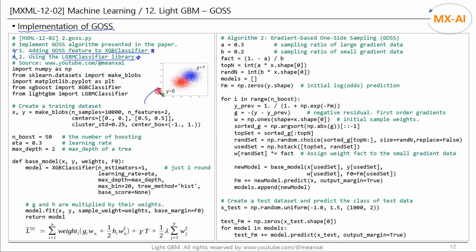The data we will use is set up as follows. Set the number of boosting rounds to 50, the learning rate to 0.3, and the tree depth to 2. Create a base model for the first method using the XGBoost XGBClassifier as the base model, with the number of boosting rounds set to 1. We will repeat the training 50 times. Set the learning rate, max depth, and tree method to histogram-based, with the number of bins set to 20. We then fit this model to the training data X and Y, with the weights and log odds values.